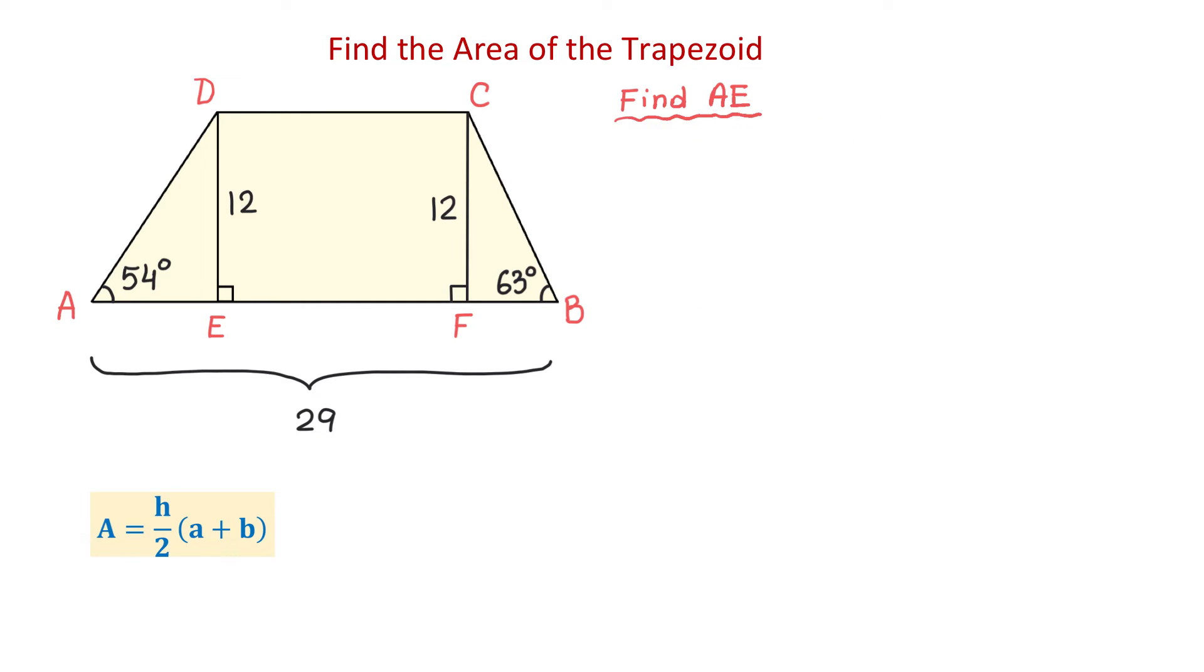Here, to the right, we will write that tangent of 54 degrees equals the opposite side, 12, divided by the adjacent side, A, E. From here, A, E equals 12 divided by the tangent of 54 degrees. Then, we will use a calculator, and we will get that A, E is approximately 8.72 units.